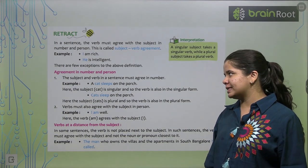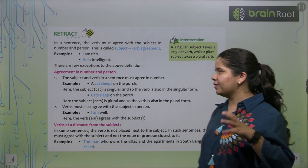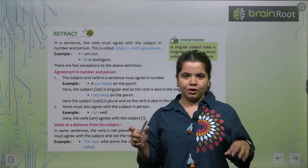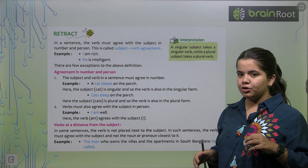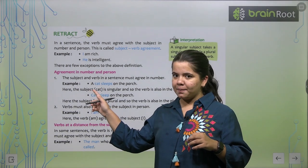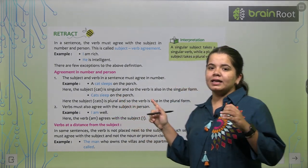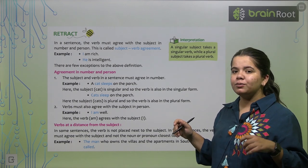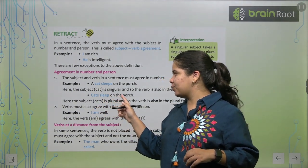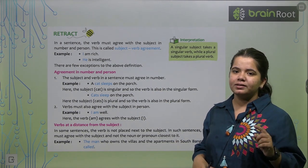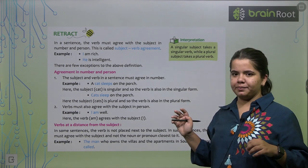Agreement in number and person. So, the subject and the verb in a sentence must agree in number. The verb, which is our verb and subject, we need to agree with the number. Like, a cat sleeps on the porch. So, you can see that we are talking about one cat but we are talking about sleeps. This way you have to see where you have to sleep and where you have to use the verb.